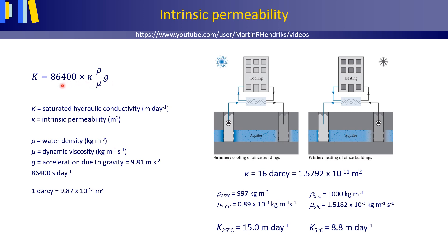86,400 is simply a factor to directly convert the hydraulic conductivity from meters per second to meters per day. The intrinsic permeability in square meters is a function of the size of the openings through which the groundwater flows, and thus of the porous medium. Both the water density Rho and dynamic viscosity Mu, being the thickness or resistance of a liquid to flow,